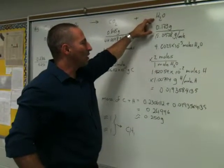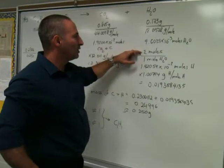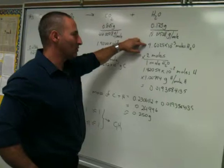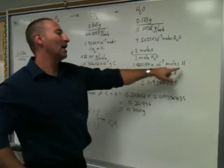Likewise, for every mole of water that's formed, you're going to get twice as many moles of hydrogen. So we have 9.6 times 10 to the minus 3 moles of water forming. Twice that amount is 1.92 times 10 moles of hydrogen.